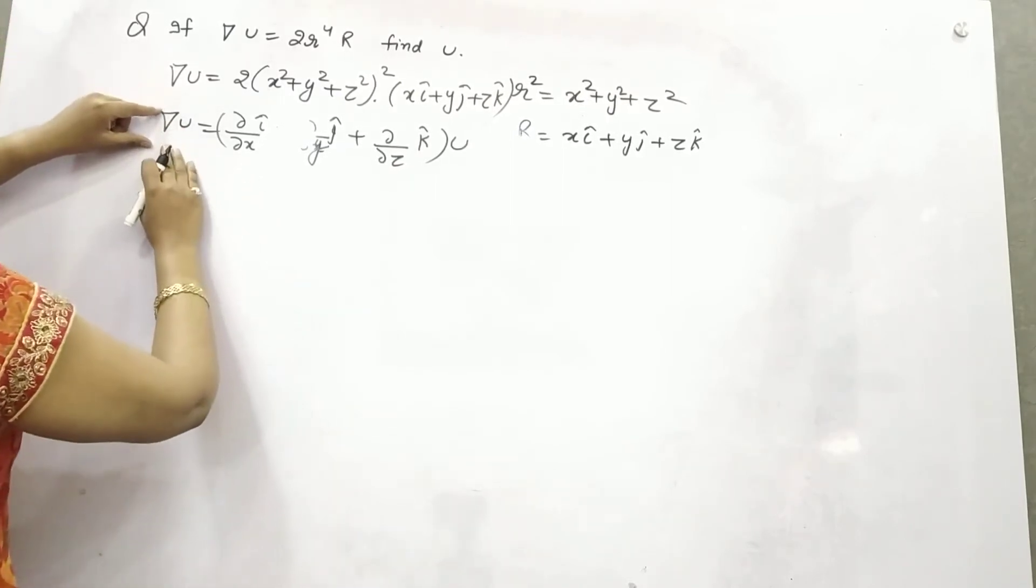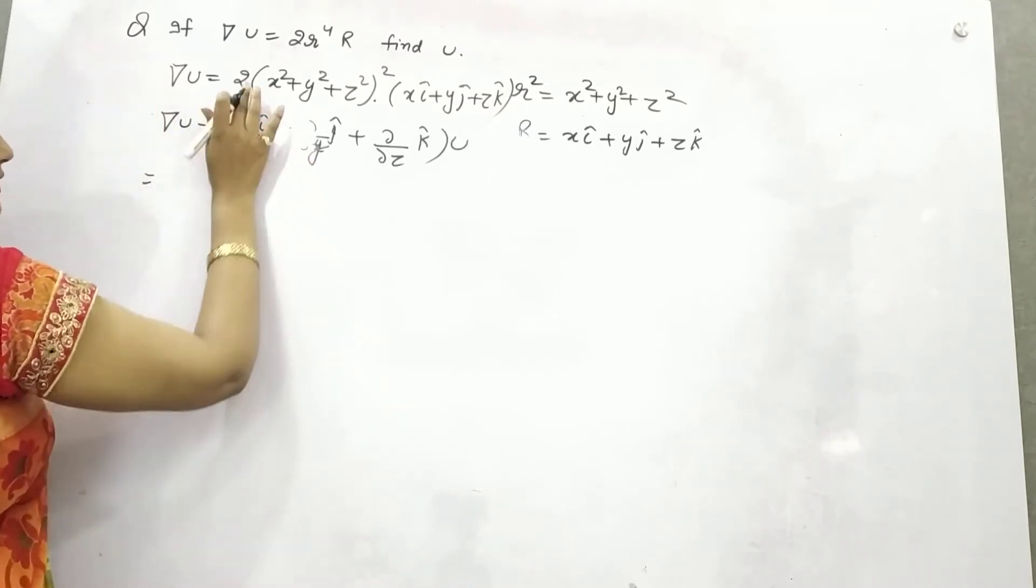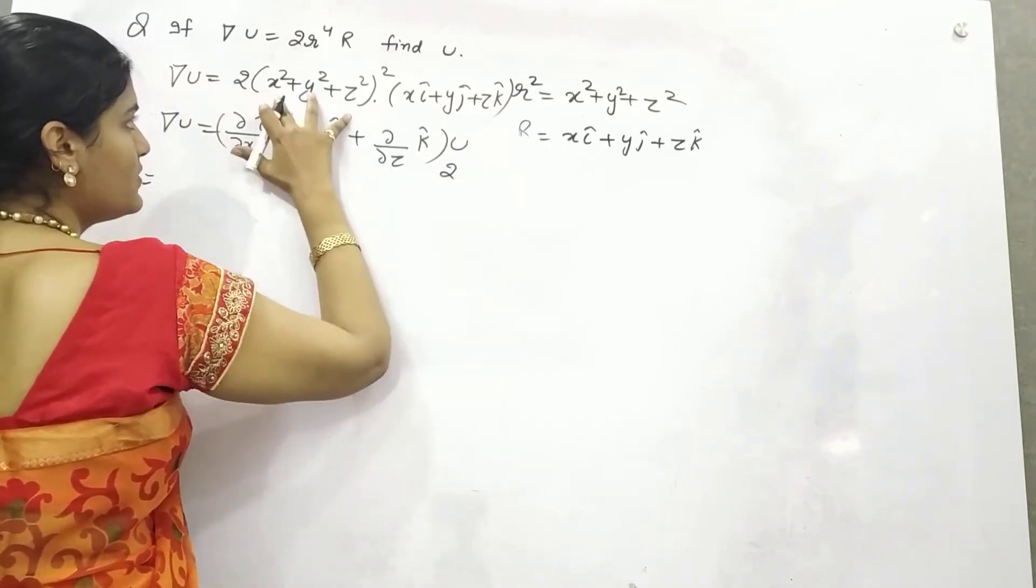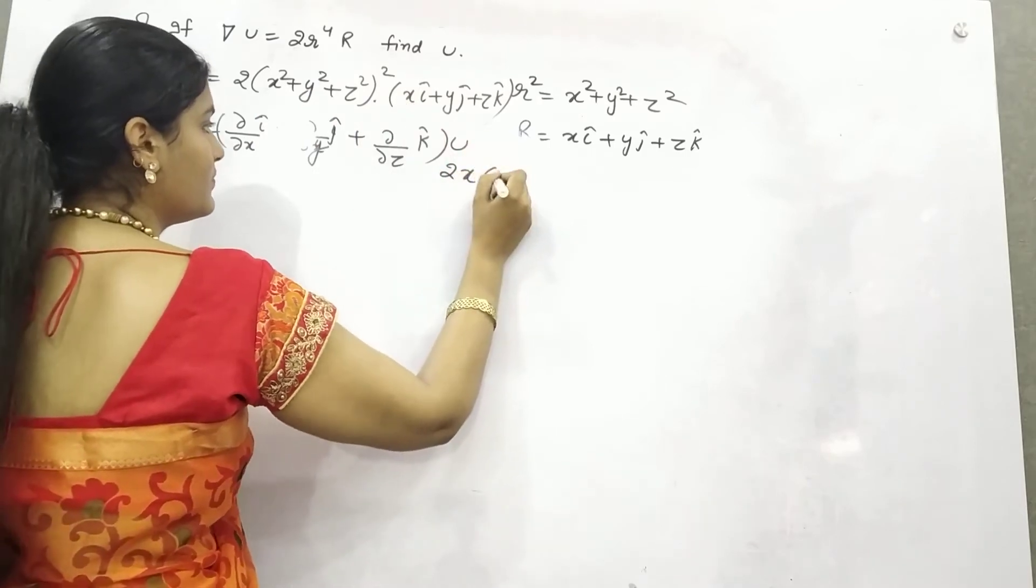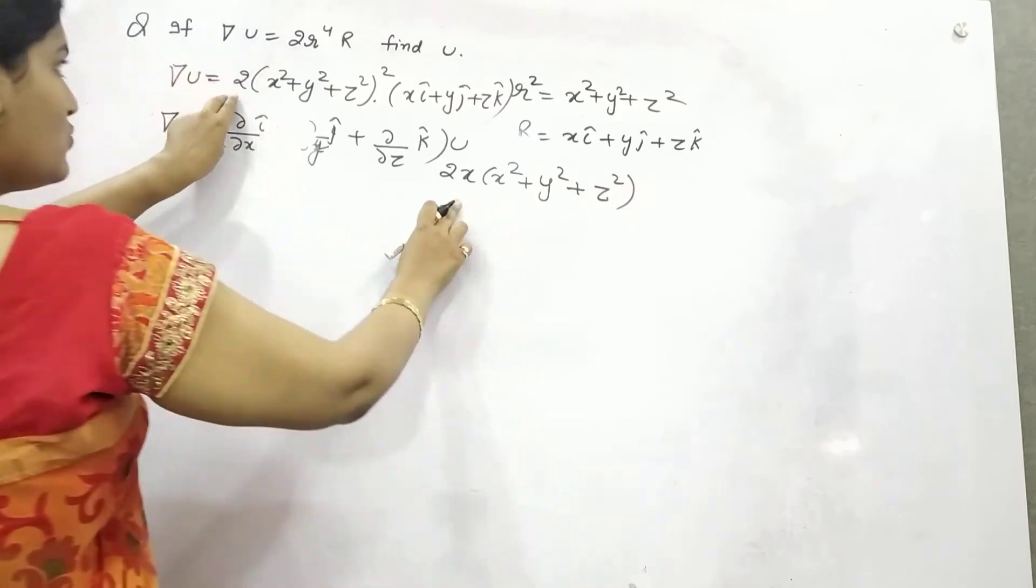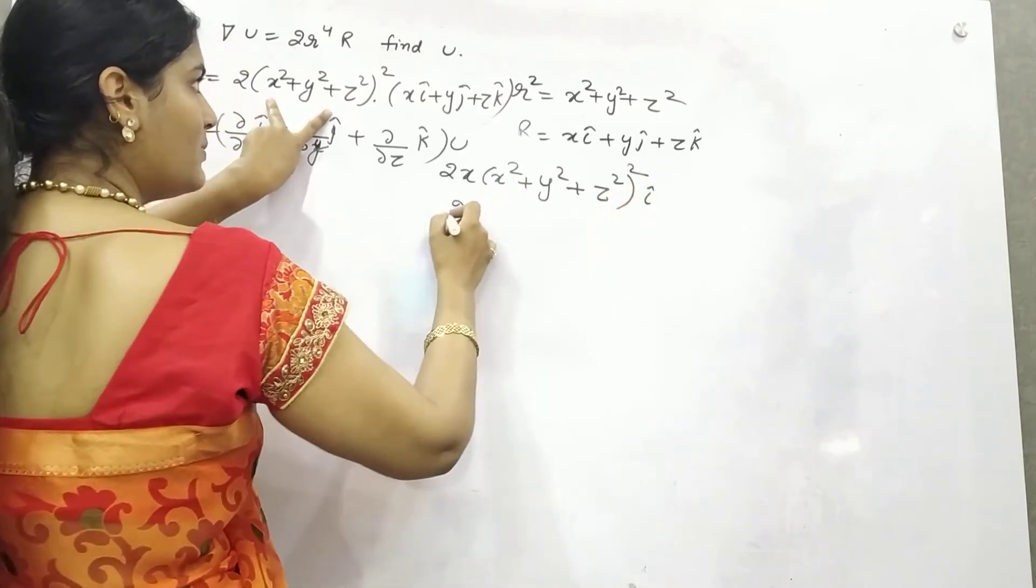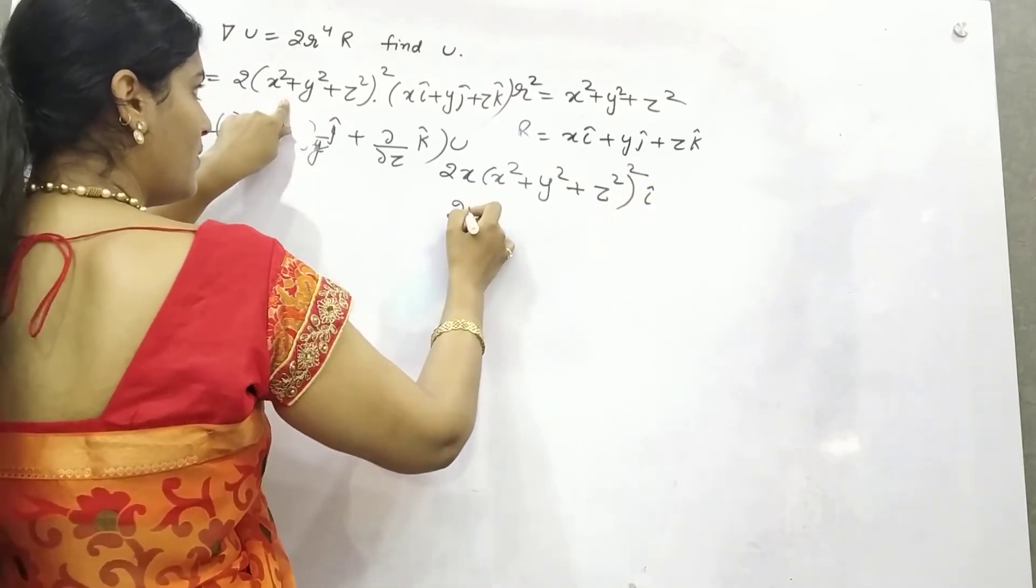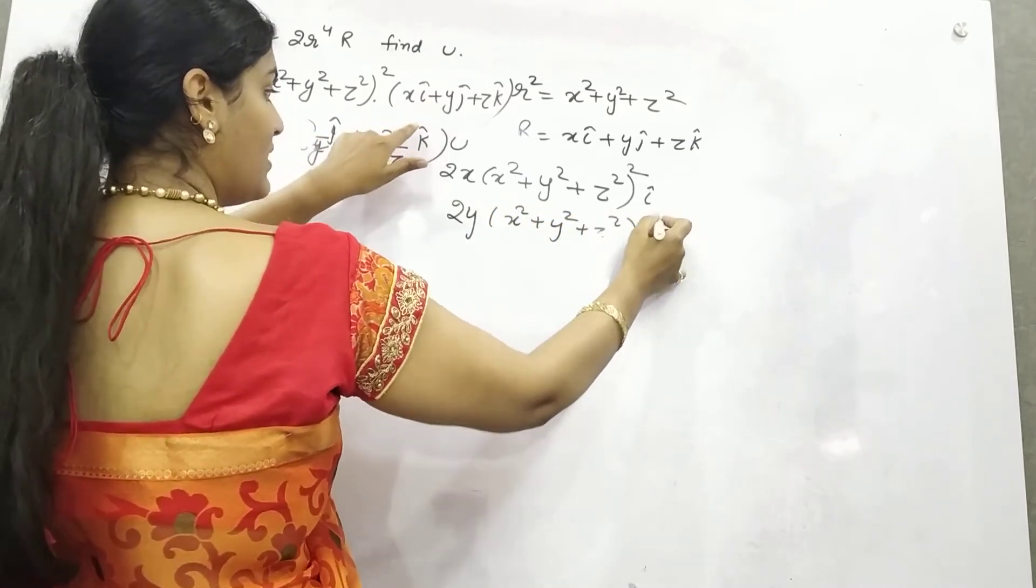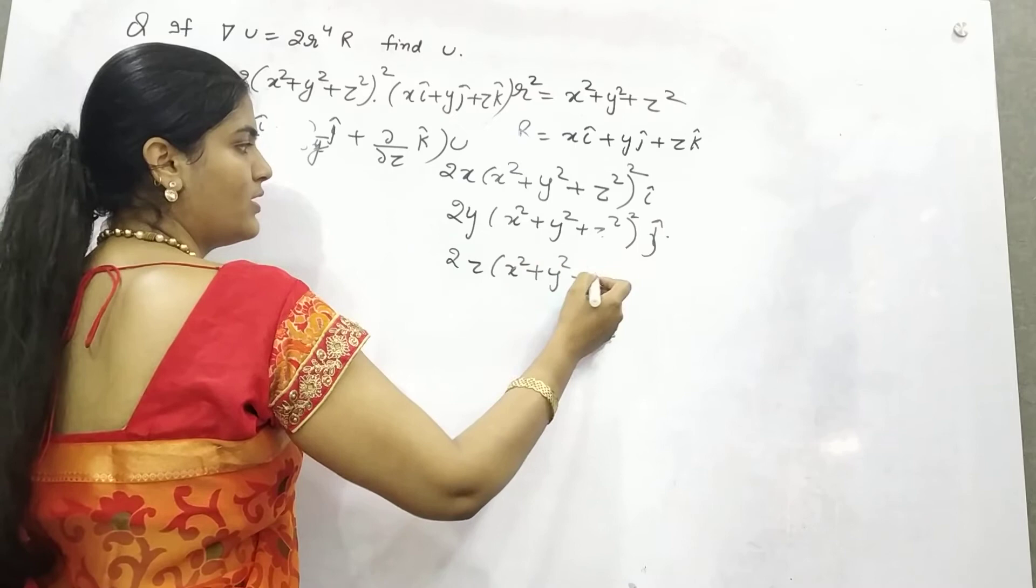So if you see, this is your function. If you compare, what you will get? You can see that 2 times this multiplied by x is your i component. Similarly, 2y(x² + y² + z²) is your j, and 2z(x² + y² + z²) is your k.